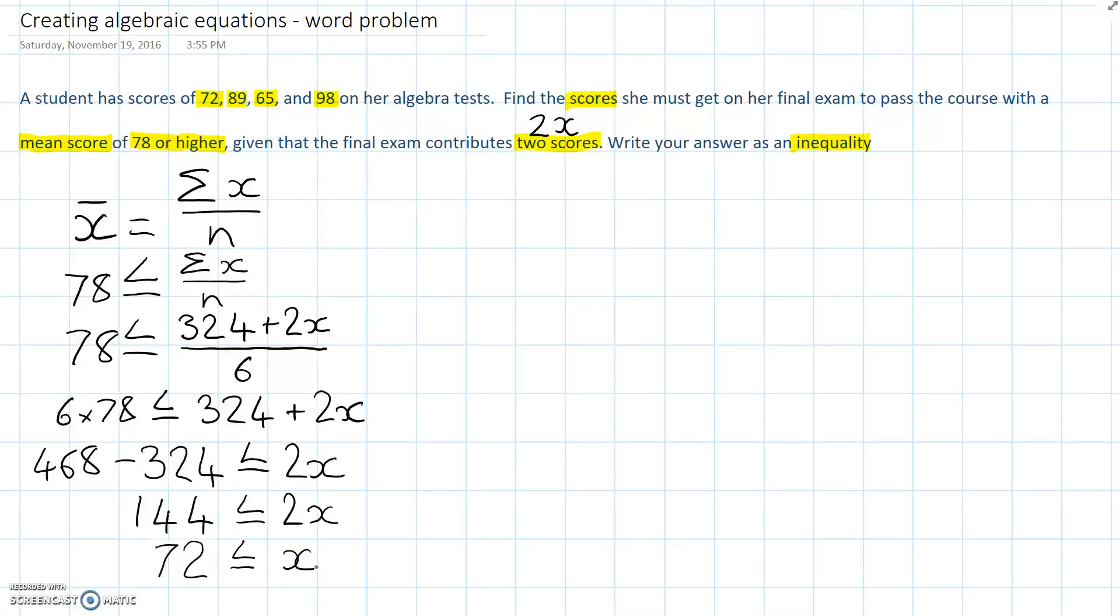So, if we rewrite this now, in order for us to understand what x has to be equal to, we get, therefore, x. Now, the open end of the inequality symbol is on x's side. So, if I rewrite this the other way around, I have to preserve this situation. So, the open end on the same side as x. So, x is greater than or equal to 72.